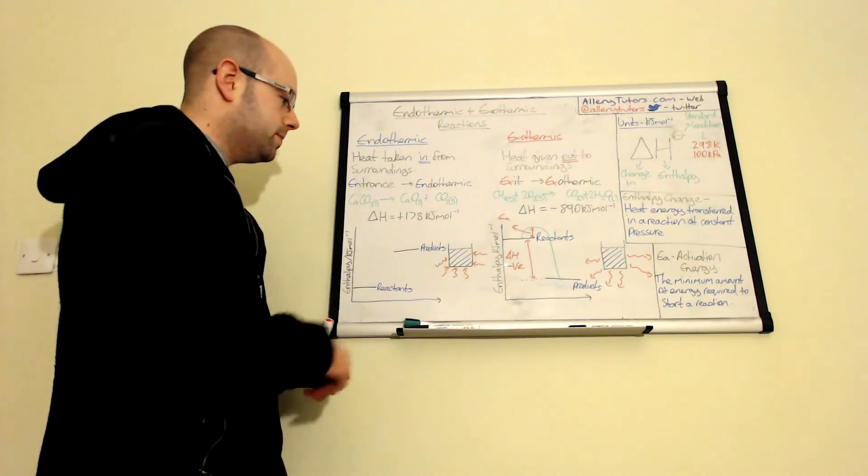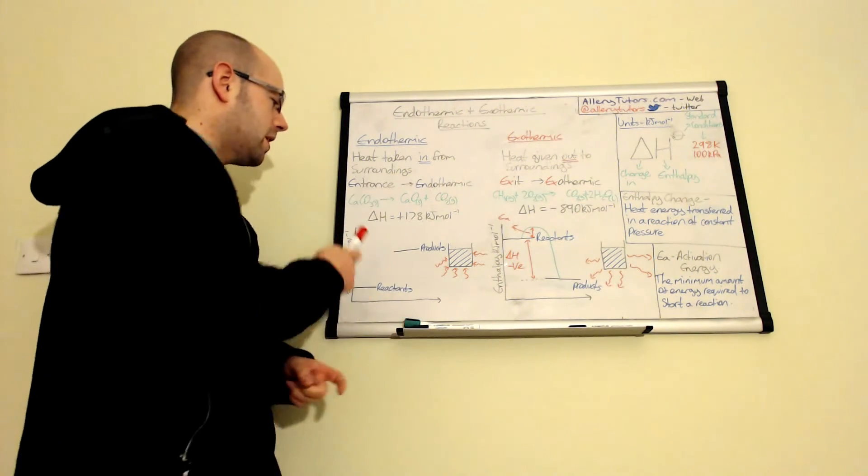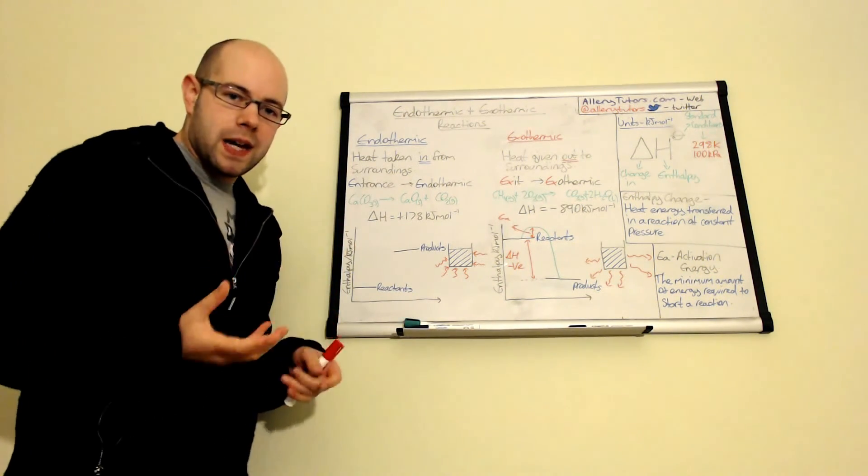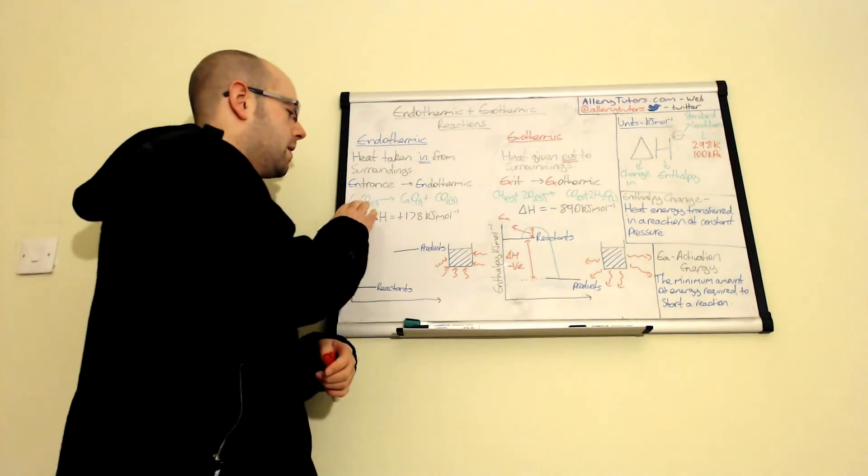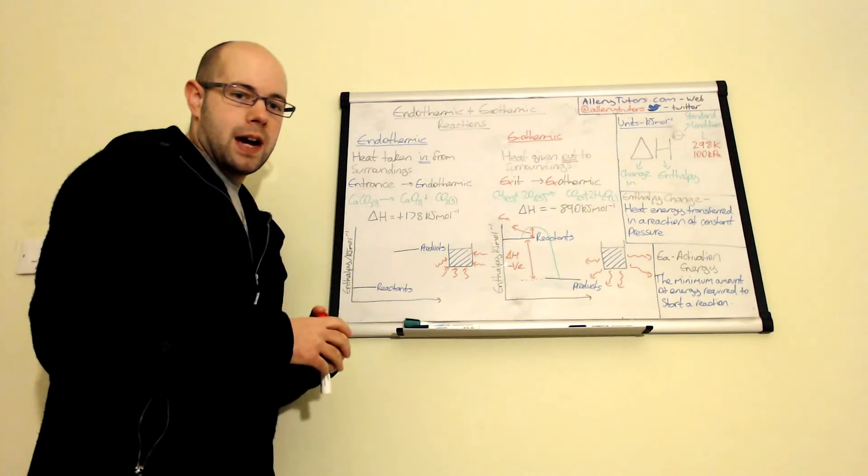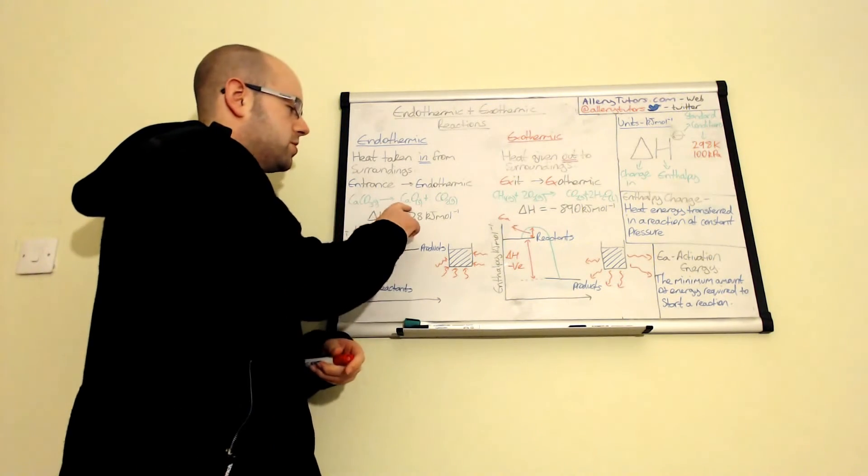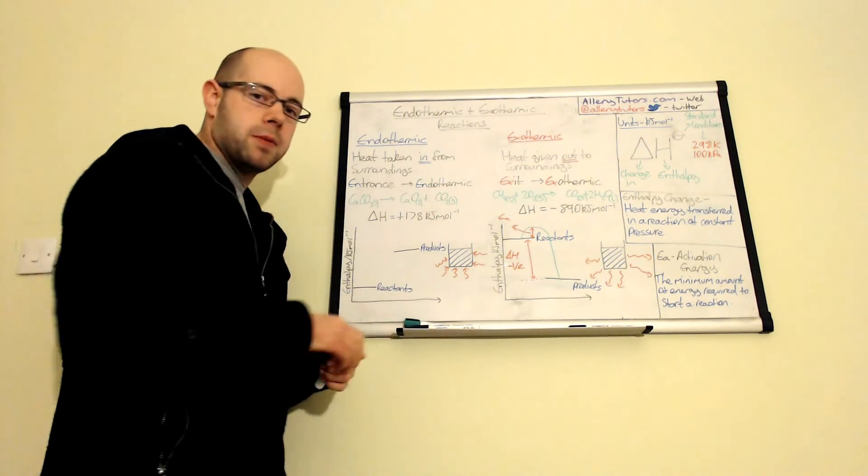If we come on to the endothermic reaction. Now here's an example here. This is the decomposition of calcium carbonate. So calcium carbonate being limestone. So this is actually an endothermic reaction when calcium carbonate turns into calcium oxide and carbon dioxide.